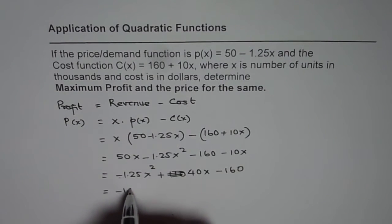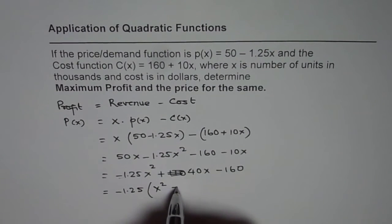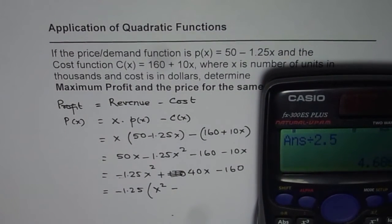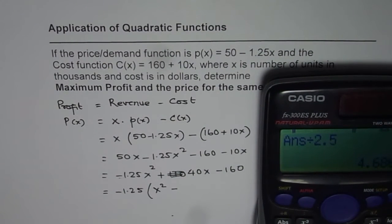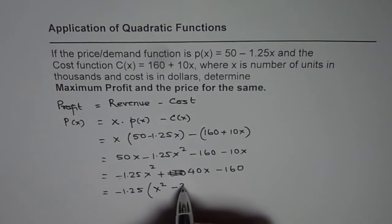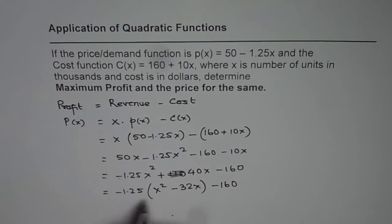We'll take minus 1.25 common and then we get x squared. Since we took minus, this becomes negative. 40 divided by minus 1.25, so 40 divided by 1.25 is 32. So we already put the negative sign here. 32x and minus 160.